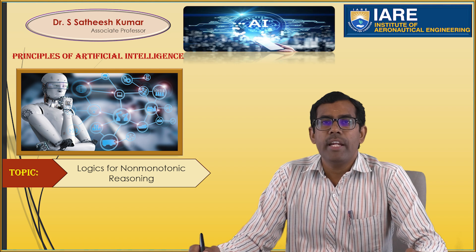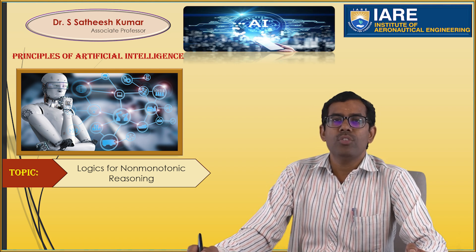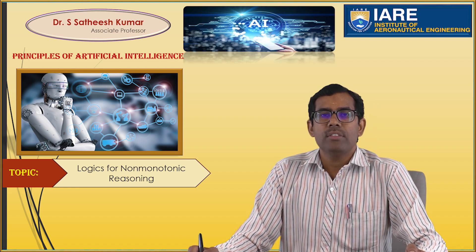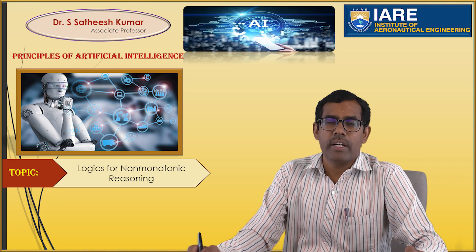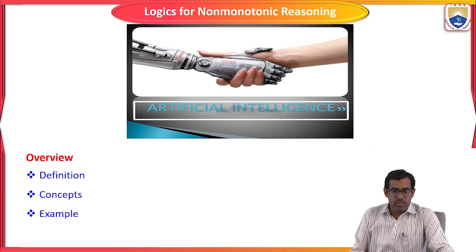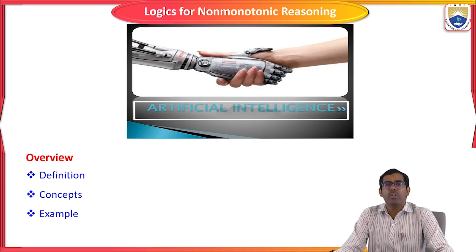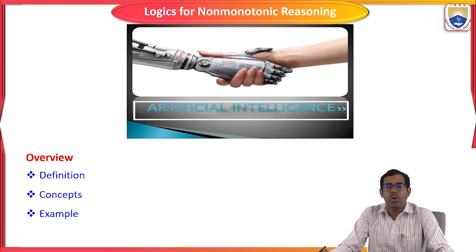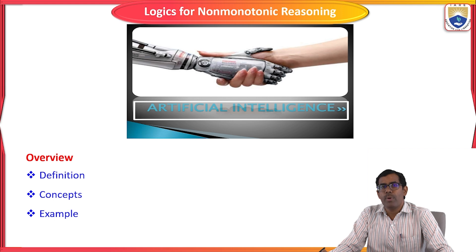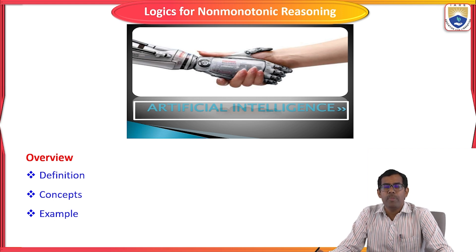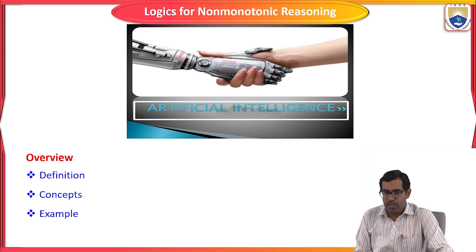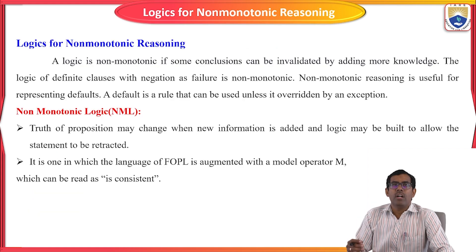If you have any doubt about non-monotonic reasoning, just refer to the previous session and come back for this session. So let us start. I am going to tell about the definition of the logics for non-monotonic reasoning — what logic we are going to use to solve some critical problems in artificial intelligence using non-monotonic reasoning — and explain the concept with examples.